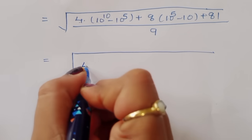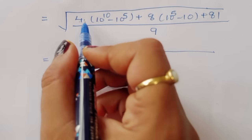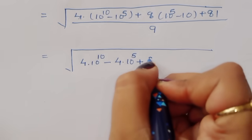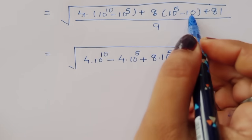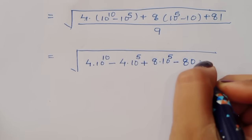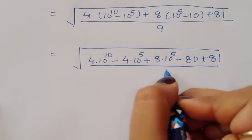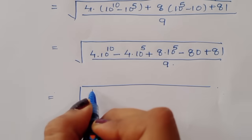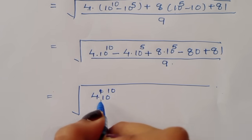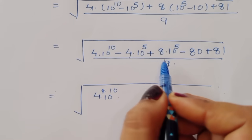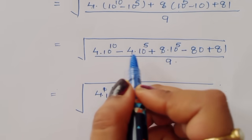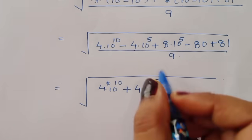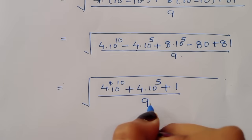So we get: 4 into 10 raised to 10, minus 4 into 10 raised to 5, plus 8 into 10 raised to 5, minus 80 plus 81 divided by 9. Combining like terms: 8 minus 4 gives plus 4 into 10 raised to 5, plus 1, divided by 9.